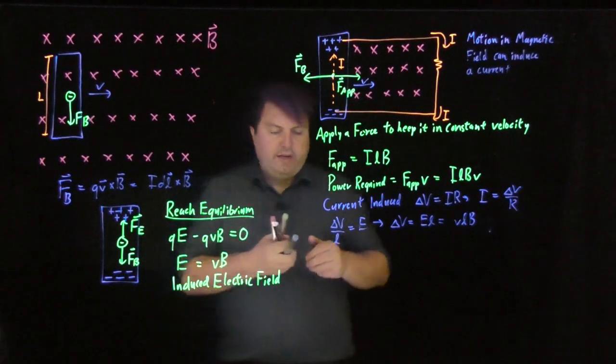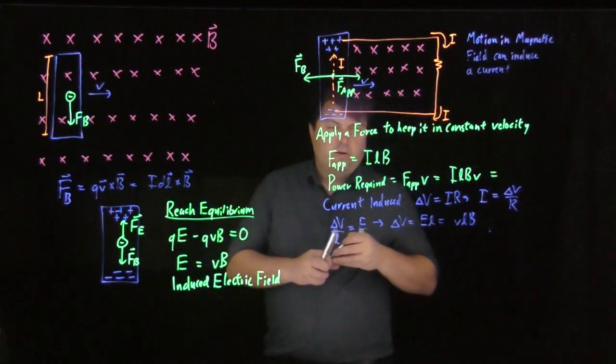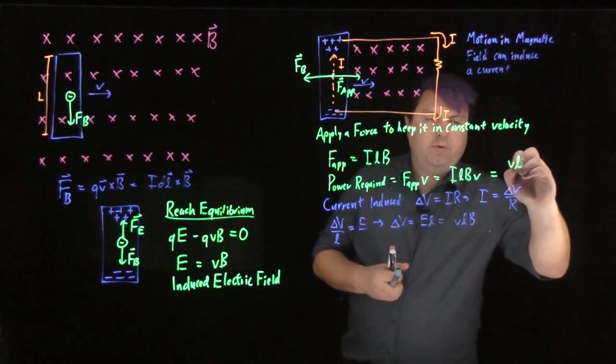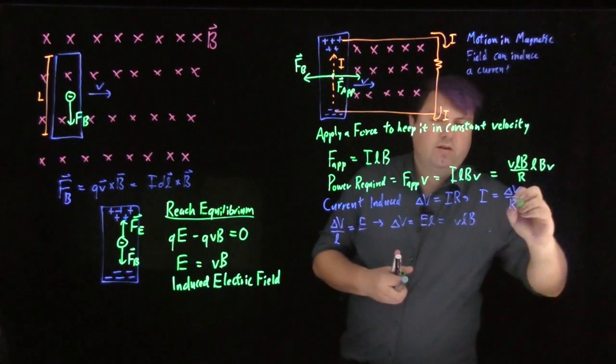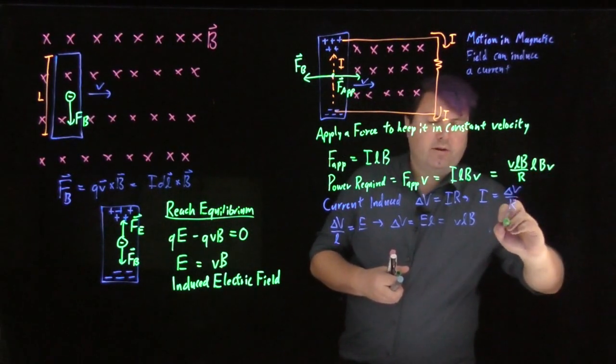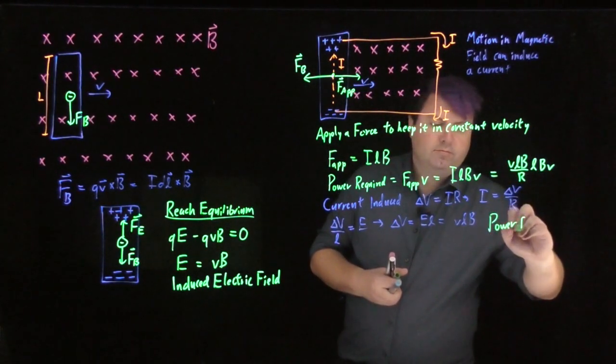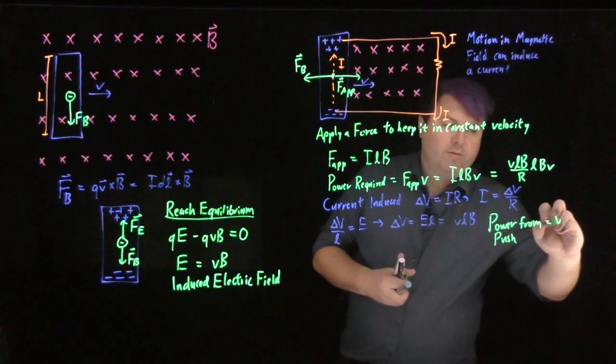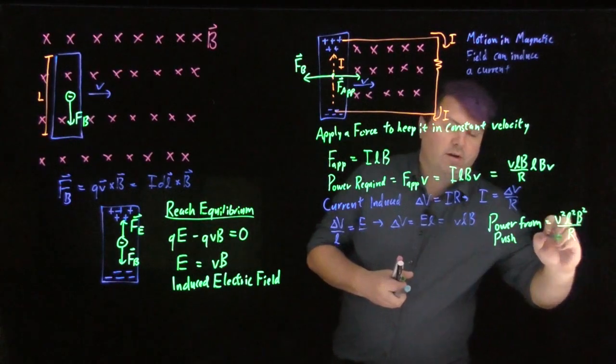And so looking at this, then we have I is delta V over R, so we have VLB over R times L times B times V. And so we get the power from the push must equal V squared L squared B squared over R.